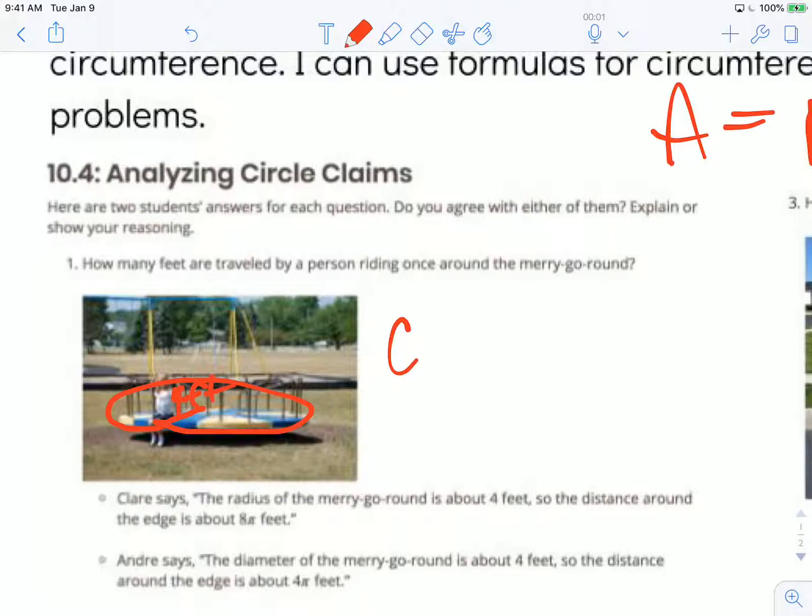Andre says the diameter of the merry-go-round is about 4 feet, so he thinks that 4 feet is all the way across. And so then he gets a circumference of about 4π feet. Both of these people use the correct formula. They use the circumference formula. But the thing that I have to decide now is the only difference between them is this right here, this distance of 4 feet. Claire says that's the radius. Andre says that's the diameter.